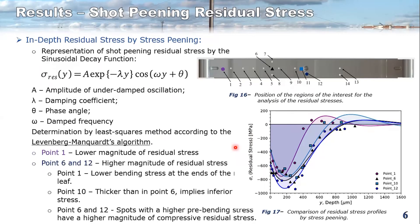And well, you can observe that point one is where the magnitude is lower. And why? Because in this spot, the pre-bending stress is lower than the other ones.